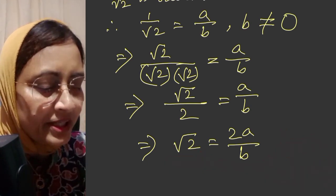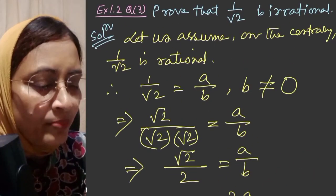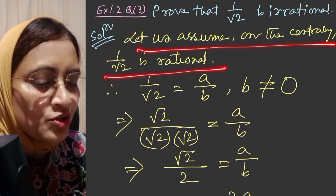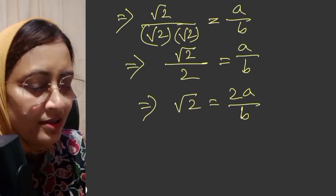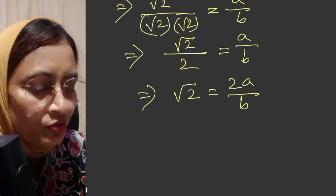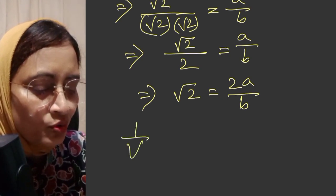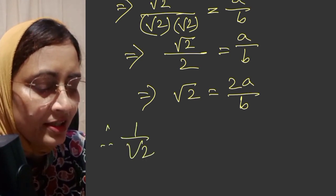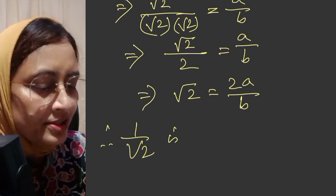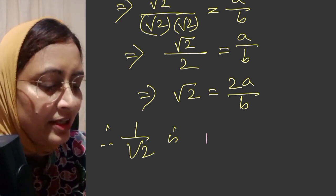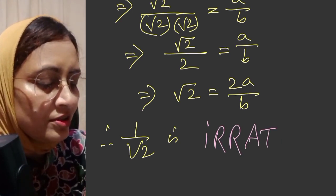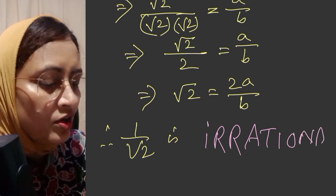That means our assumption is not true. Therefore, 1 by root 2 is irrational, and our assumption is wrong.